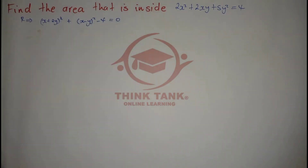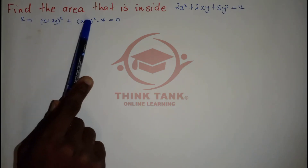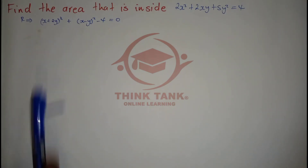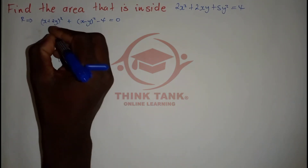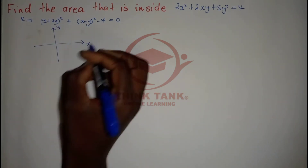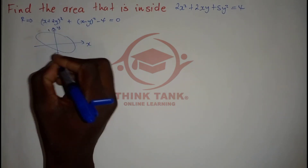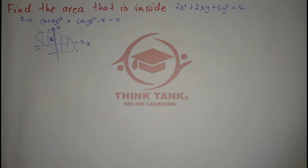After completing the squares, I can see: (x + 2y)² + (x - y)² - 4 = 0. If you don't know how to complete the squares, I have a video on my Facebook page at Think Tank Online Learning. This looks like an equation of a circle, but the radius is varying. Let me sketch what the region R looks like — it goes from about -1 to 1 on both axes.